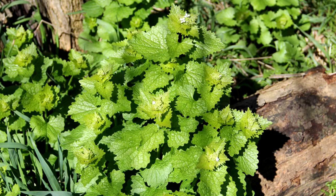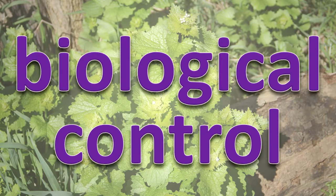Invasive species often spread quickly in a new location because there are no predators that have evolved to help control them. Biological control involves releasing a natural predator from the invasive species' native habitat into its new habitat. Animals, fungi, or diseases can be used for biological control.